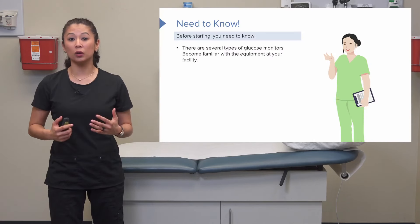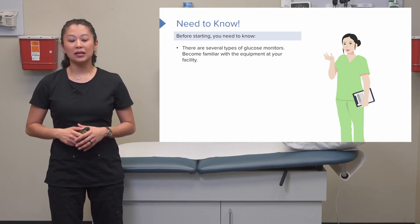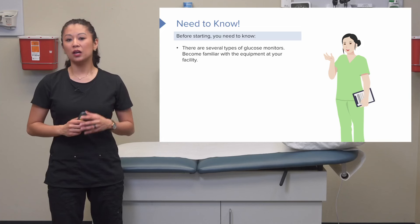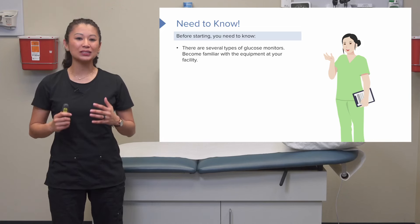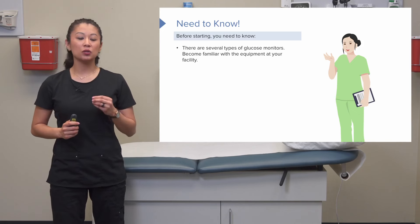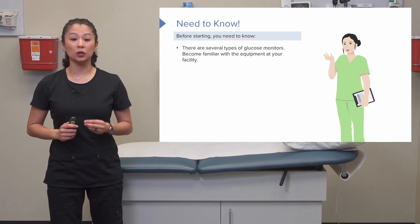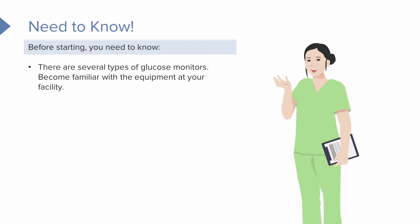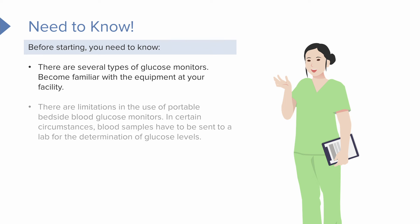Let's take a look at some important points to keep in mind. The principles of obtaining the actual level are about the same throughout, but just know there are several different types of glucose monitors with a lot of variations. You want to become really familiar with the agency equipment that you have, because the equipment used in the hospital versus what your patient uses at home can be quite different, and therefore the capabilities and limitations of your monitor will vary.